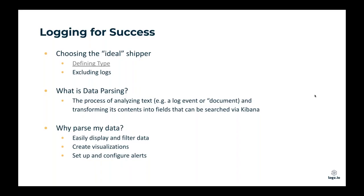Logging for success. The first item that's important for getting data into Logs.io is choosing your ideal shipper. There are a variety of ways of getting data into Logs.io. One would be an agent - a little piece of software that sits on an individual machine, reads data from a log file, and sends it up to Logs.io. You can also log directly from an application, or tap directly into one of your cloud services like AWS or Microsoft Azure.